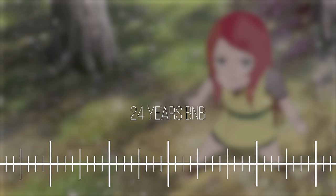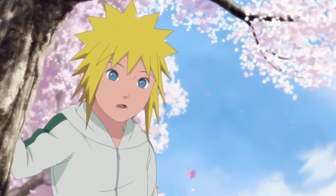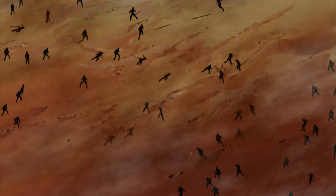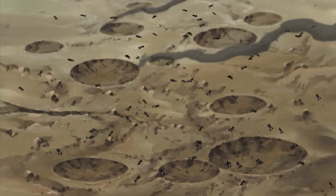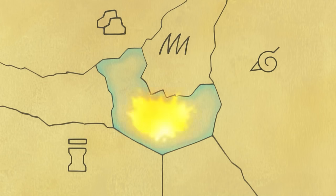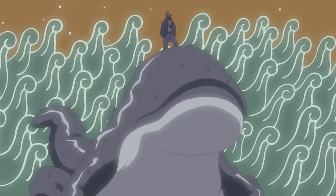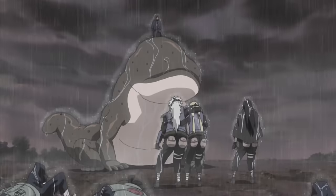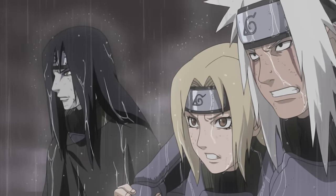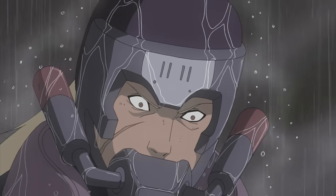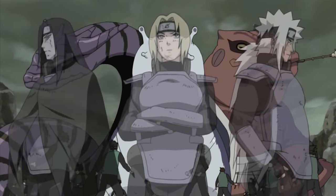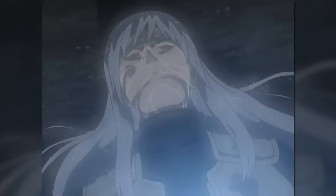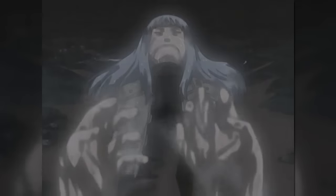24 BNB — January 25th and July 10th — Minato Namikaze and Kushina Uzumaki are born. Approximately 14 to 5 BNB: the Second Shinobi World War. The tenuous peace suddenly shatters, giving rise to the Second Shinobi World War. Hanzo of the Salamander confronts the Konoha forces, leaving devastation in his wake. Only Jiraiya, Tsunade, and Orochimaru manage to withstand this onslaught, earning them the moniker Konoha's Sannin. Tragedy strikes Tsunade as Dan Kato, her beloved, succumbs to battle-induced blood loss, instilling her with hemophobia.